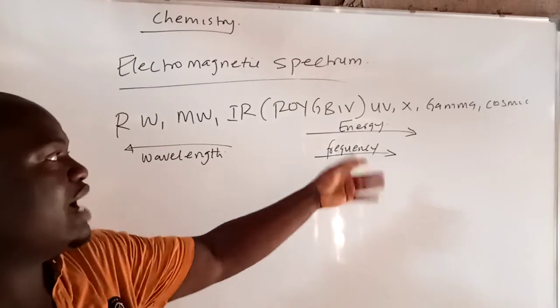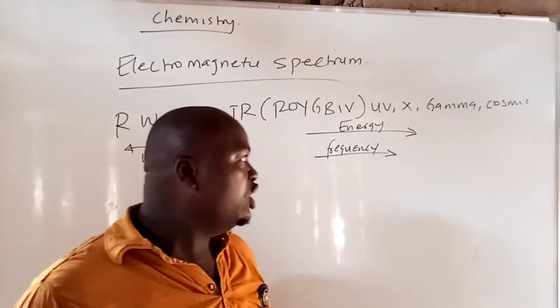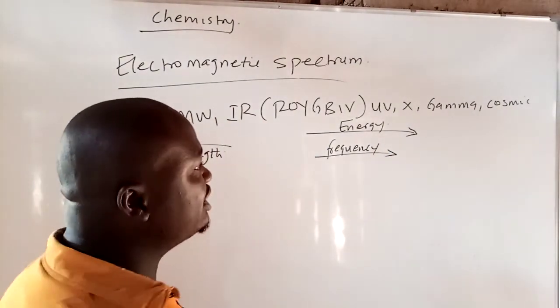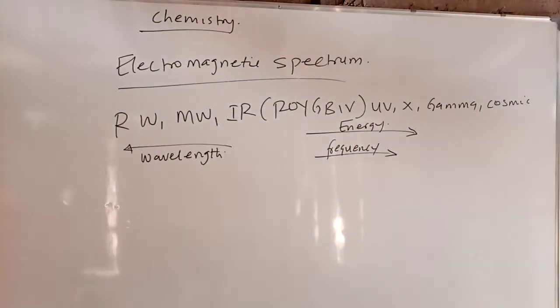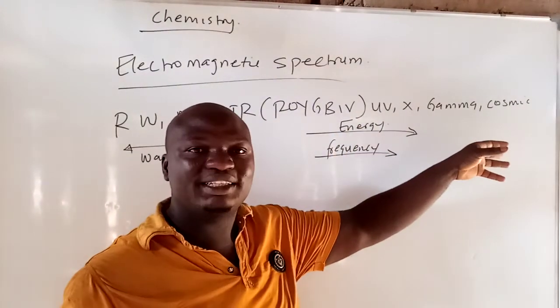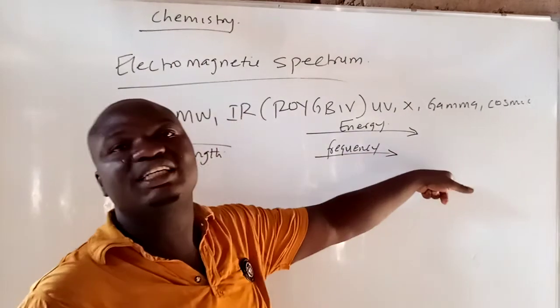And then you have things like, they will ask you, between ultraviolet and gamma rays and cosmic radiation, which one has the highest energy? Of course, you can see that cosmic radiation have highest energy than gamma rays. And they have highest energy to X-ray, because as you are moving to the right, the energy is increasing, the frequency is increasing.